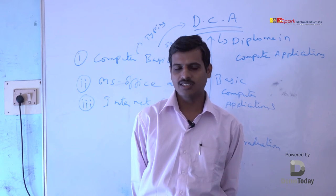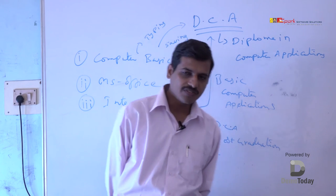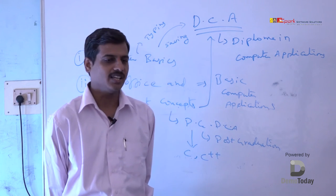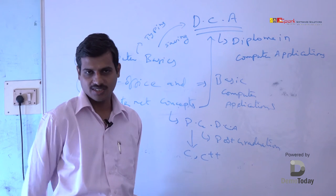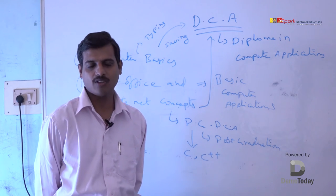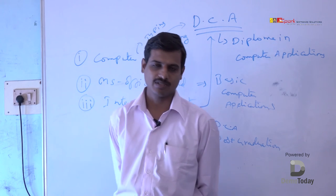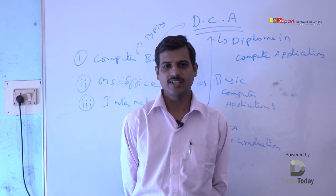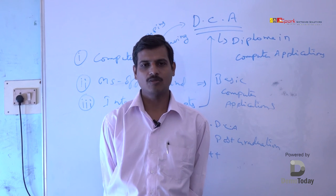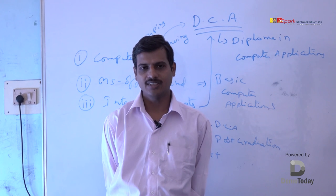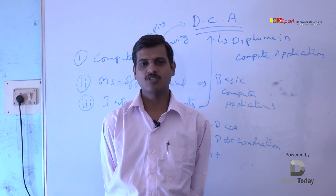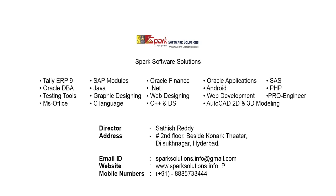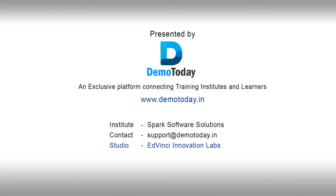The duration of PGDCA is about three months — C and C++ will be two months and the DCA portion will be one month. After course completion, we provide certificates and placements to our students.